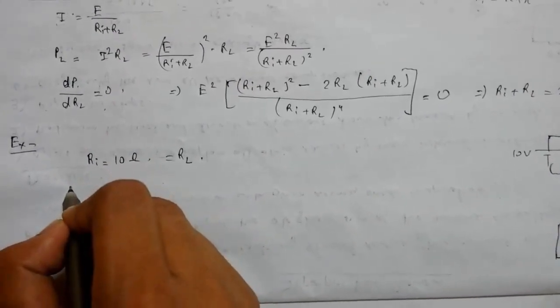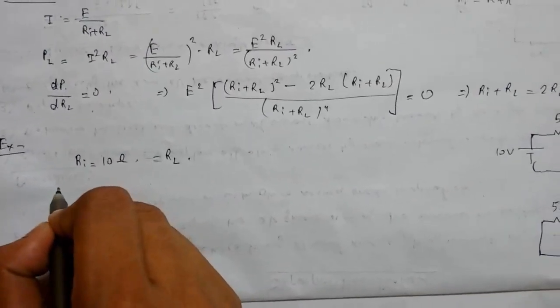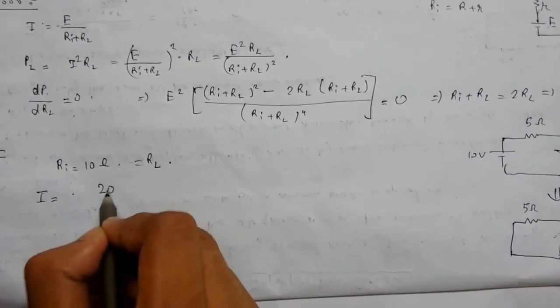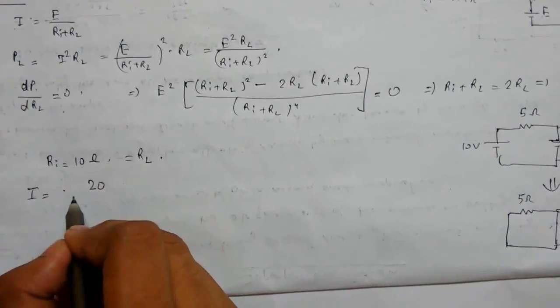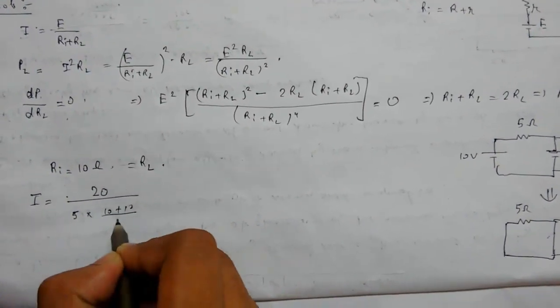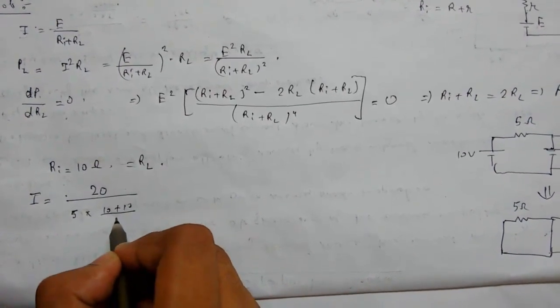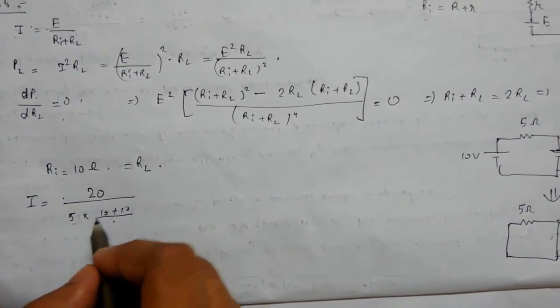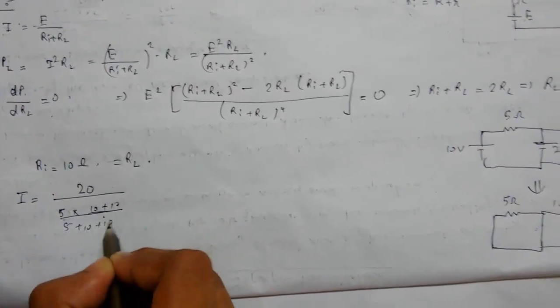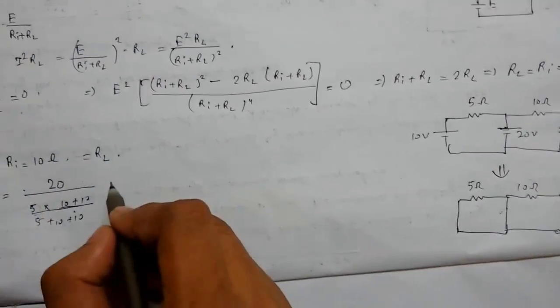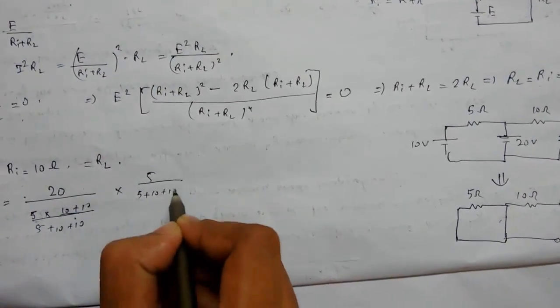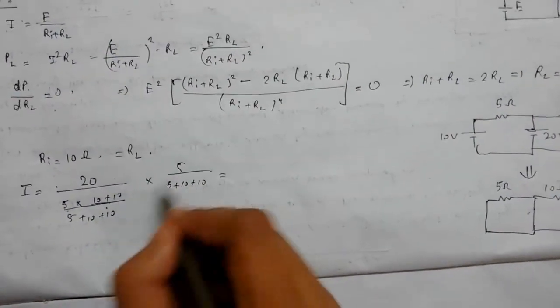be equal to 10 ohms, which equals RL for maximum power transfer. So this is the answer to the first part. Now we need to find the current through it. Current will be 20 divided by (5 + 10 + 10), which equals 1